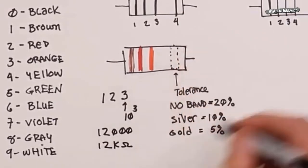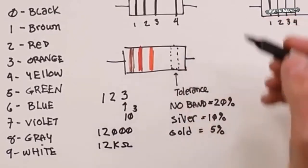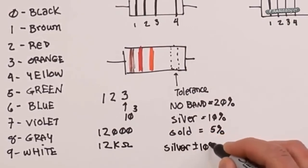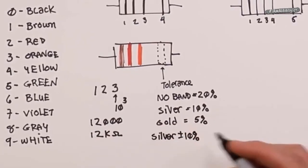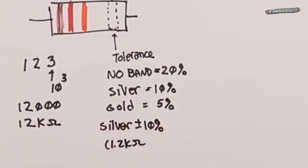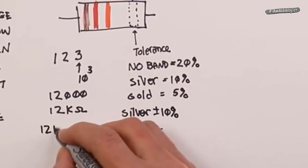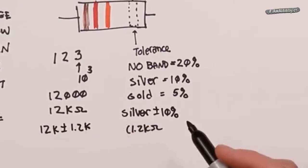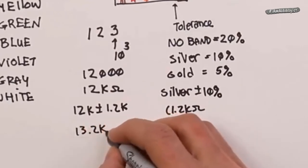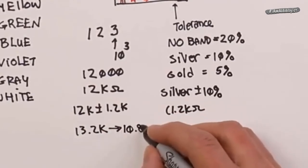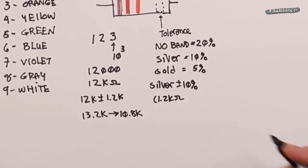If there's no band, then it's 20%. If we had, let's just say we had a silver band over here, so that's plus or minus 10%. In other words, 10% of 12 k is 1.2 k. So what we're saying is the legal range of values would be 12 k plus or minus 1.2 k. So if I go to a bin and I start pulling resistors out, they could be as high as 13.2 k and as low as 10.8 k. So those are all legal. We would hope they would all be 12 k but, you know, that's just not the case.